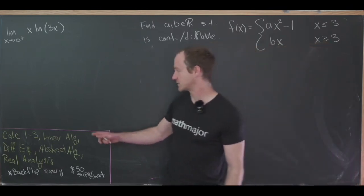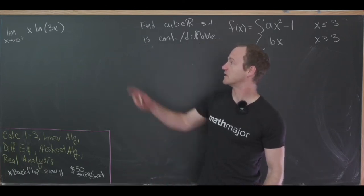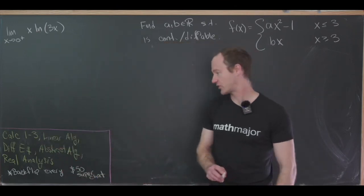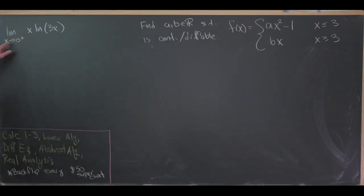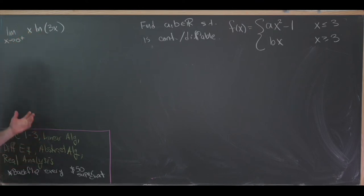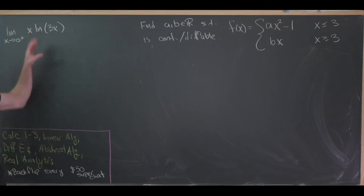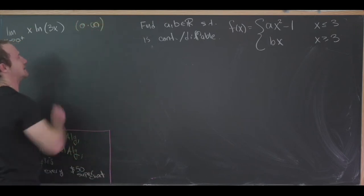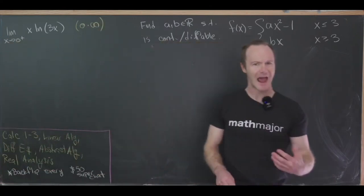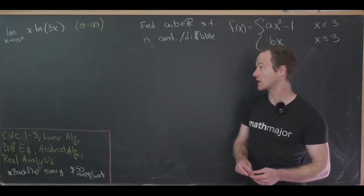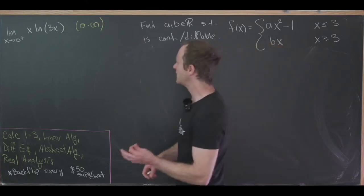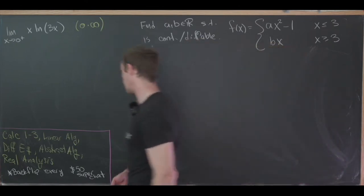Okay, so let's look at this first problem. This comes from calculus one, and that would be the limit as x goes to zero from above of x times the natural log of three times x. As x goes to zero from above, x is going to zero, but the natural log of three times x will be going to negative infinity. So this is an indeterminate form of type zero times infinity.